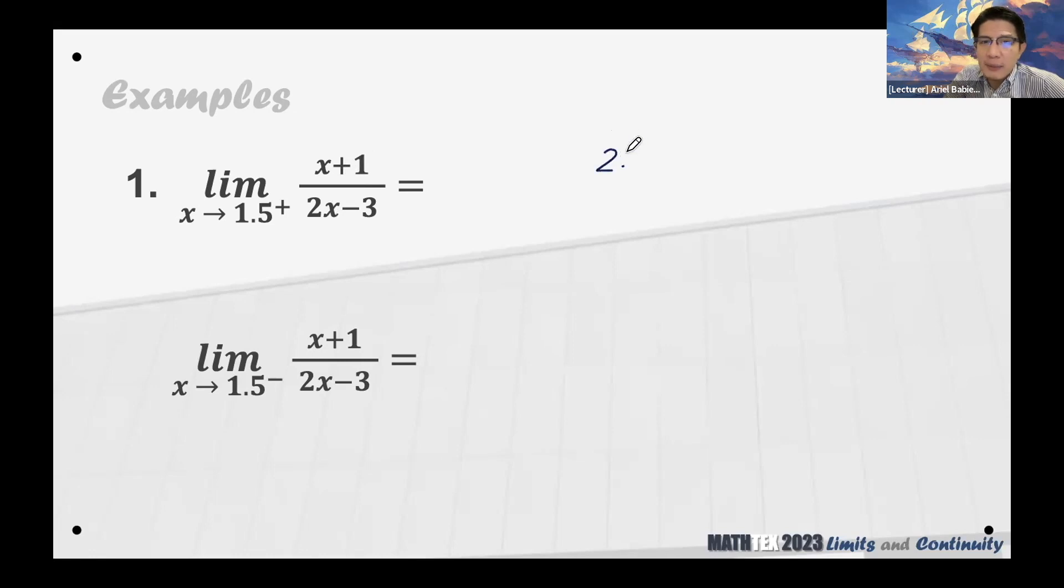The numerator will be 2.5. How about the denominator? The denominator will be 2(1.5) times 2 will be 3, 3 minus 3 is 0. Actually the same din sa second one, from the left it will also be 2.5 over 0.